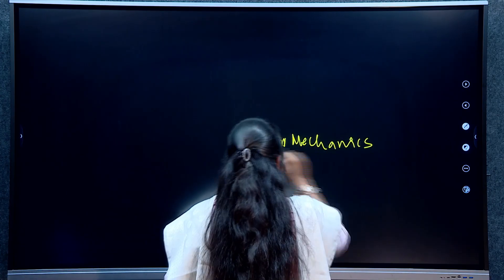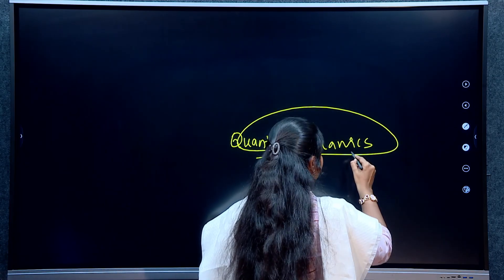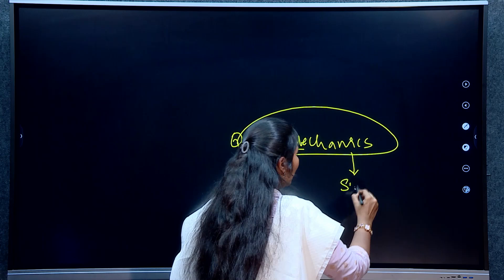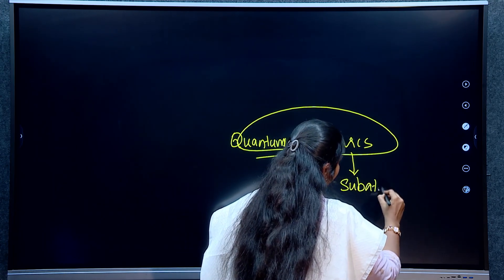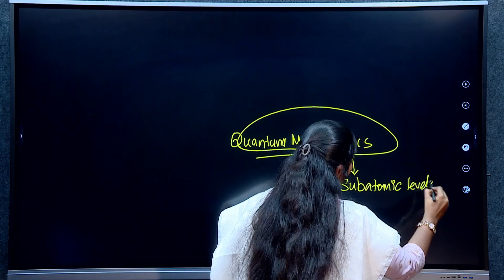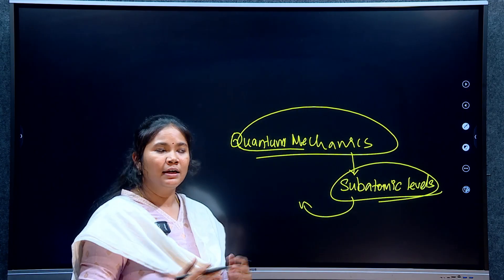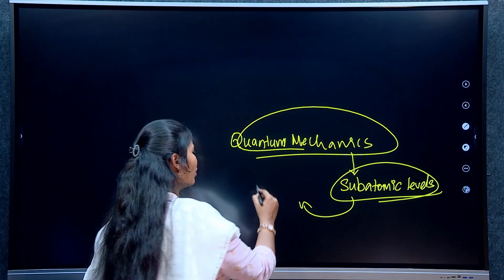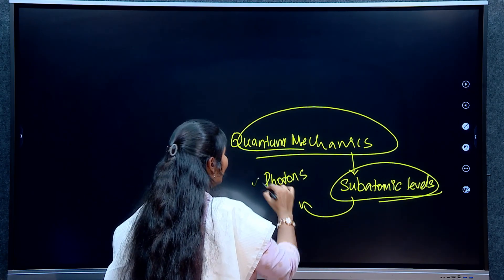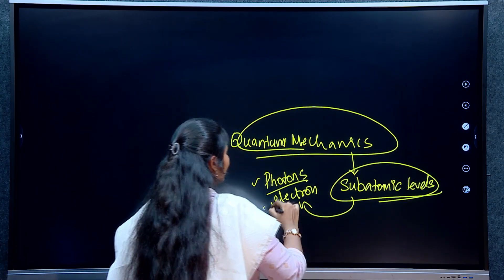Quantum mechanics lets us operate at subatomic levels. We are going to use photons and other subatomic particles like electrons. If we can control these subatomic particles, we can perform computing at a completely different level.